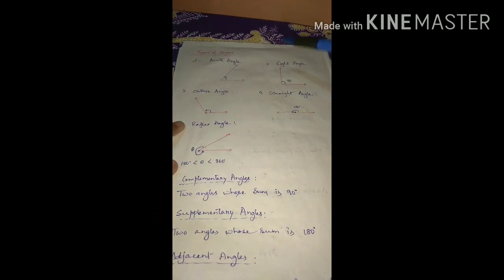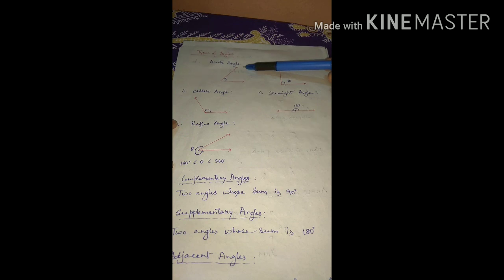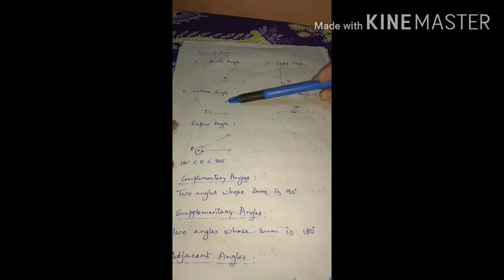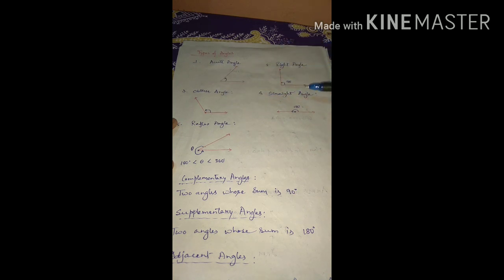Next, the types of angles. First, acute angle — less than 90 degrees. Right angle — exactly 90 degrees. Obtuse angle — more than 90 but less than 180 degrees. You all know these three. Next is straight angle — the angle that is exactly 180 degrees. In a straight line we get a 180-degree angle, and that is why it is known as a straight angle.